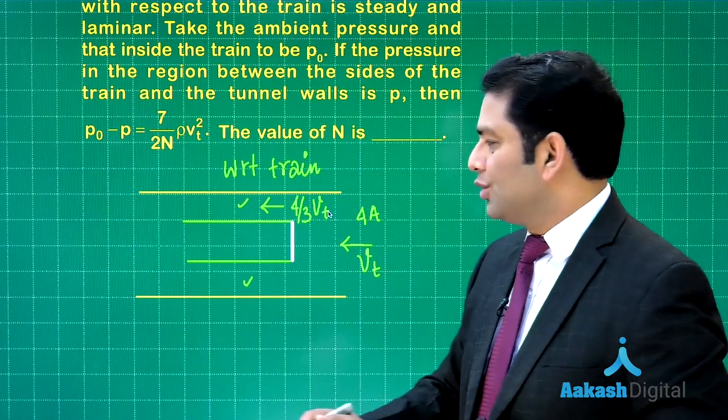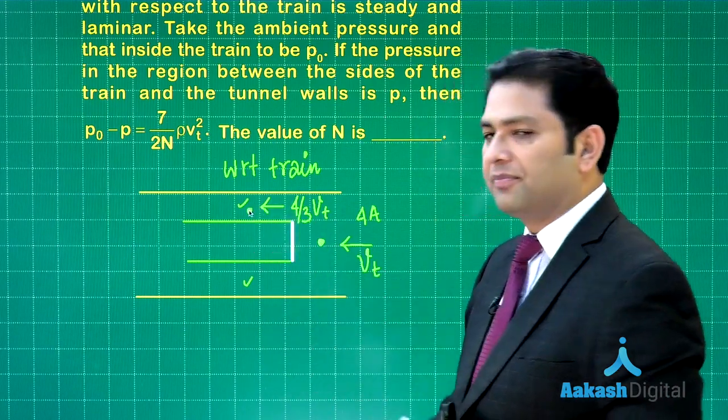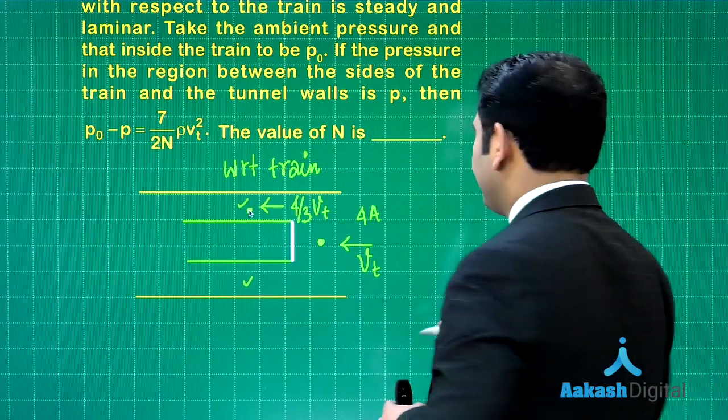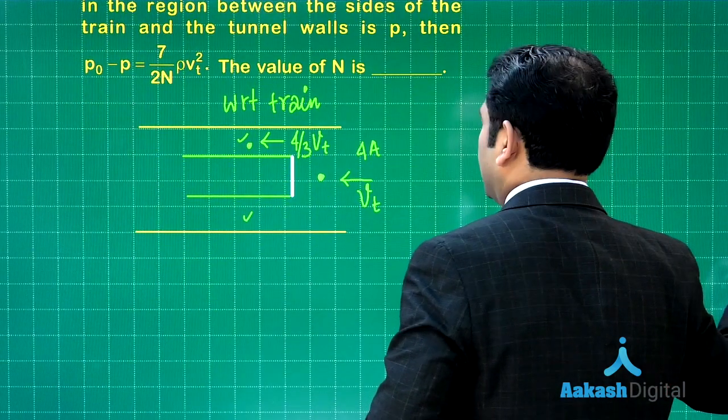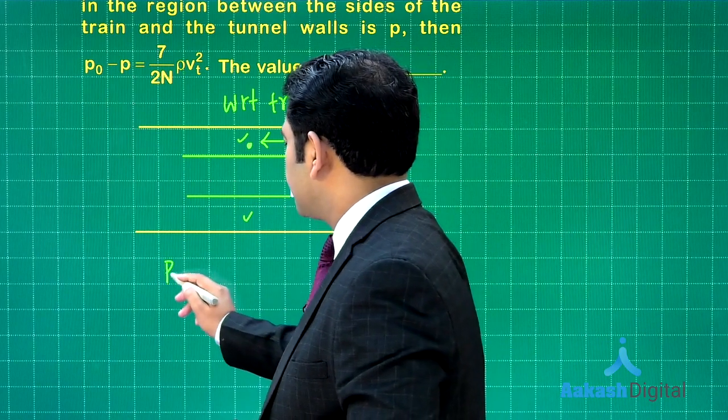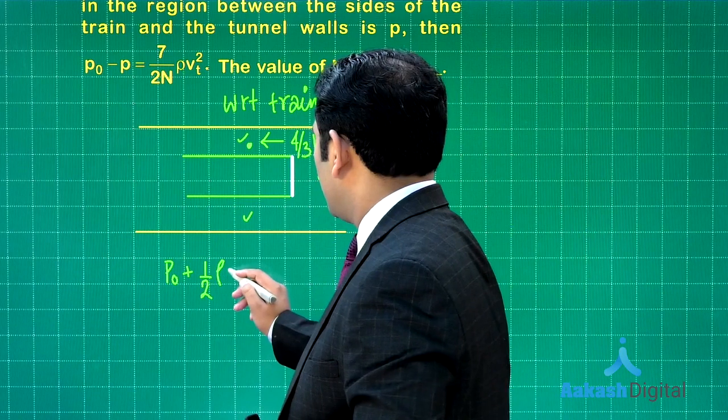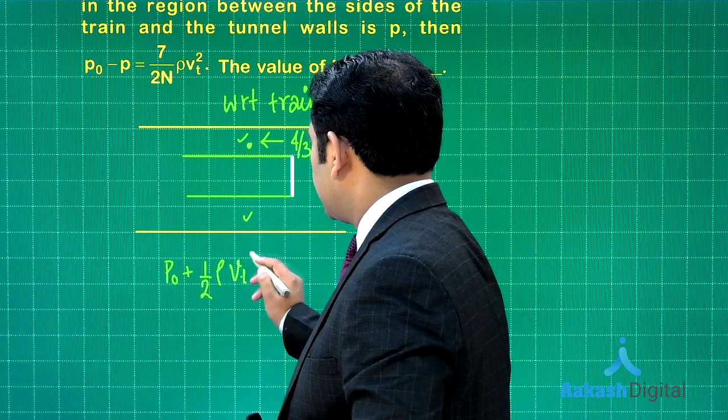If the cross-sectional area relation is this—complete is 4A and the total is 3A—the area has become 3/4, so the velocity has to become 4/3 of the velocity of air at this zone. So we got a relationship between the velocity in these two zones.